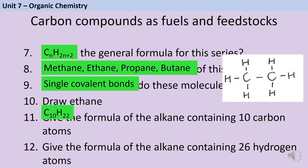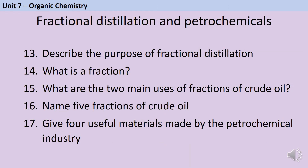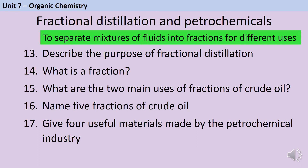You can use the general formula to work this out. The formula of the alkane containing 26 hydrogen atoms will be C12H26. Fractional distillation can be used to separate mixtures of liquids and gases into fractions that can be used for different purposes. A fraction is a group of chemicals that all have similar boiling points, so when they're undergoing fractional distillation they'll be extracted together.